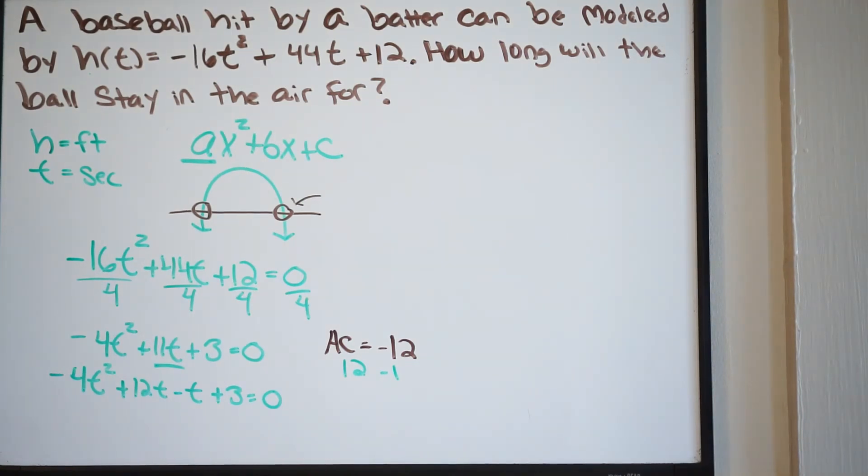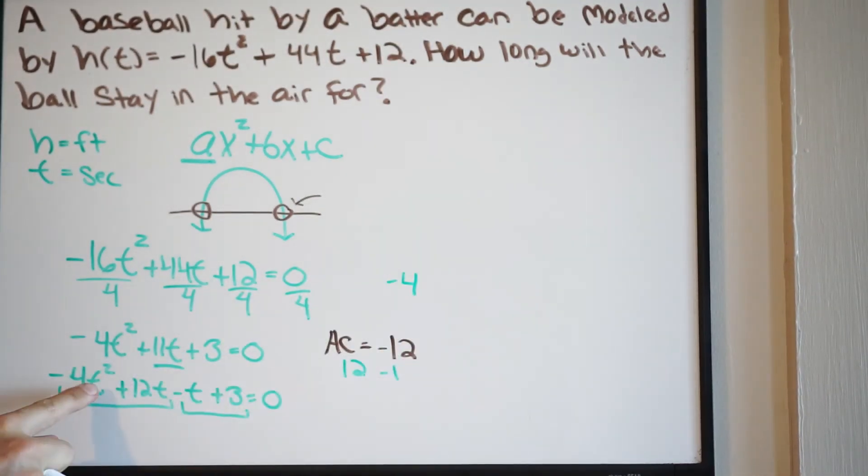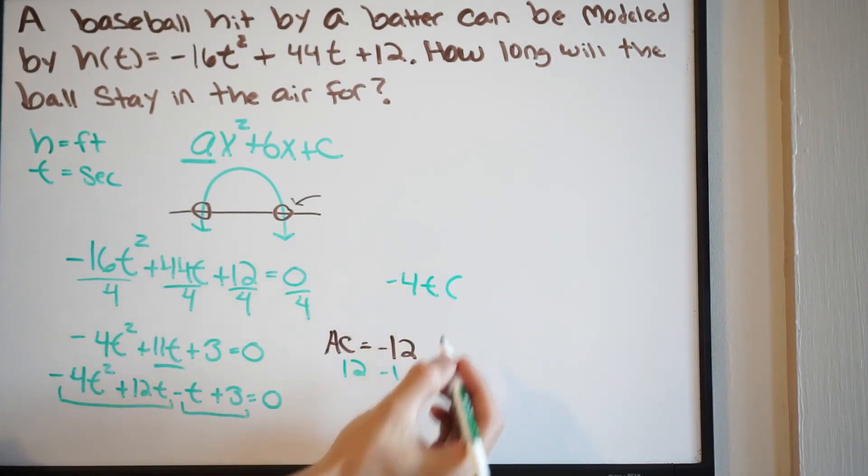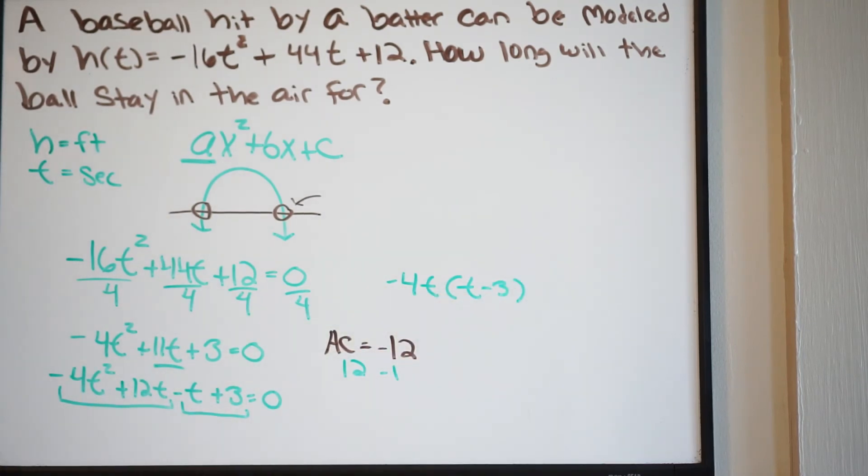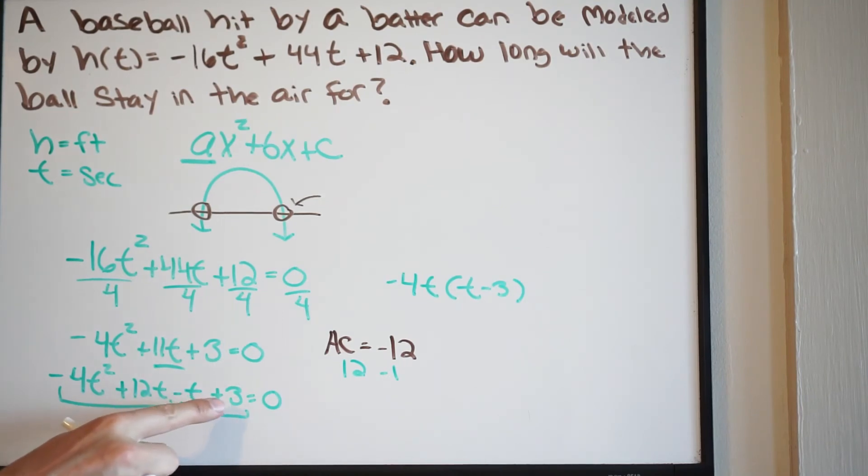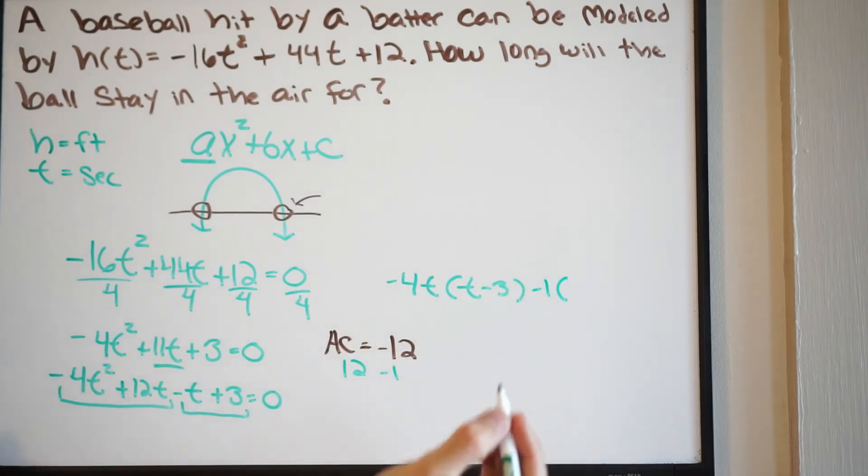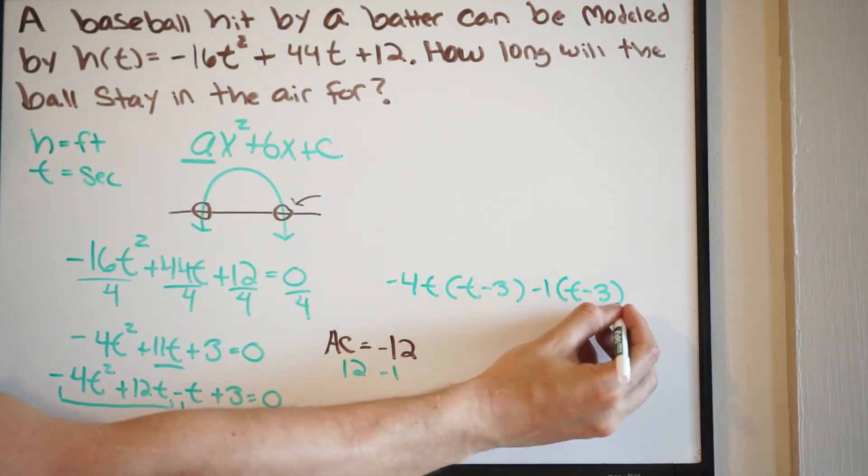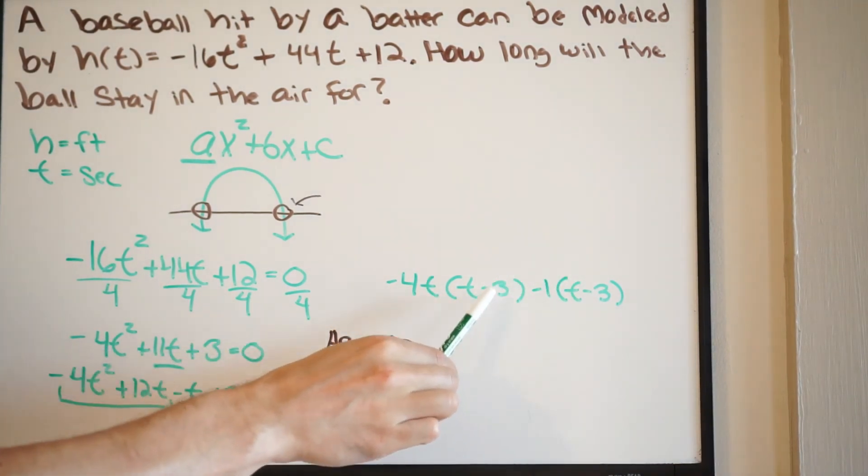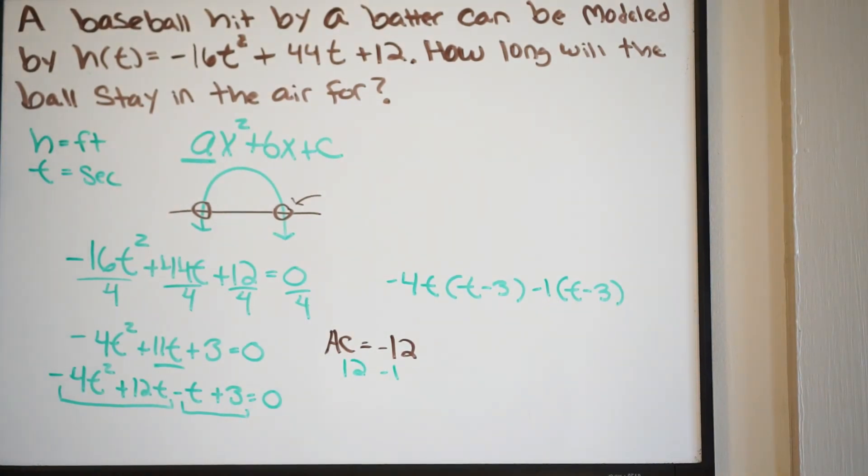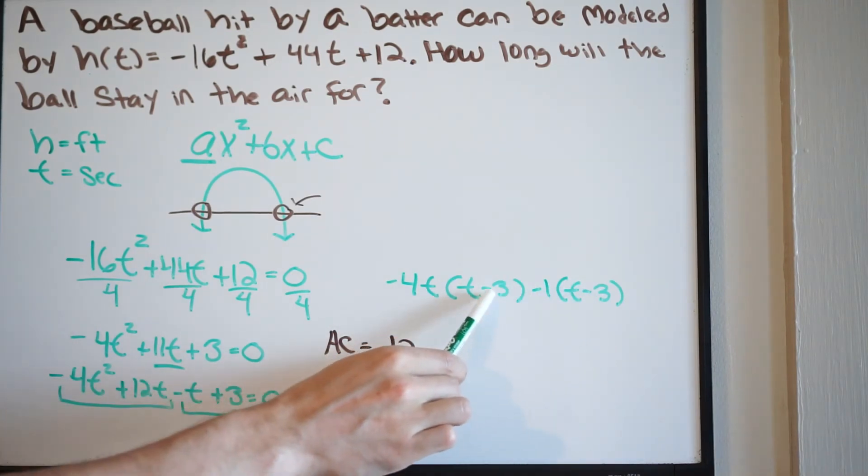So at this point, we want to go ahead and factor by grouping. So we're going to group together our first two terms. And then we're going to group together our last two terms. And what we want to do at this point is pull out a greatest common factor. So looking at the first two terms that I have grouped together, I can pull out a negative 4. So that's exactly what I'm going to do. I'm going to pull out a negative 4. And I can also pull out a t. So I'm going to pull out a t. In parentheses, I'll have the following. I'll have t minus 3. Next, we're going to our next two terms. I can pull out a negative 1. So I pull out a negative 1. In parentheses, I'm going to have t minus 3. So again, we've gone over this in the past. I have a common factor, t minus 3. That's what we're looking for. So if you do not get a common factor here, meaning if these are not the same, you need to go back and rework because you made a mistake. This is your confirmation to move on if you have a common factor. In this case, we do.